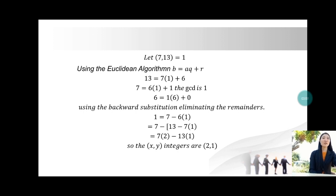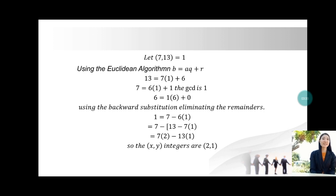6 = 1 × 6 + 0. Using backward substitution and eliminating the remainders: 1 = 7 − 6 × 1 = 7 − (13 − 7 × 1) × 1 = 7 × 2 − 13 × 1. So the integers x = 2 and y = −1.